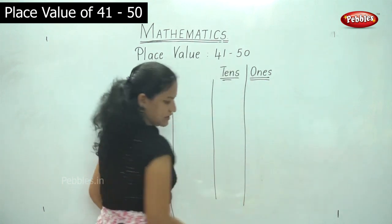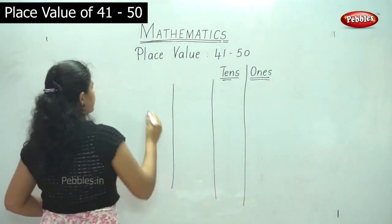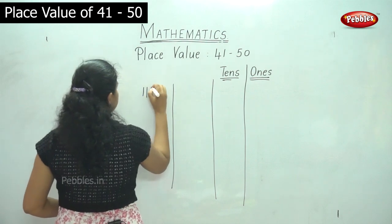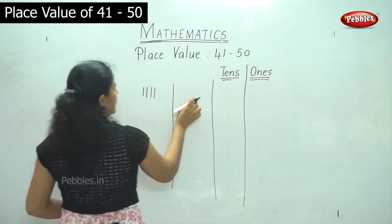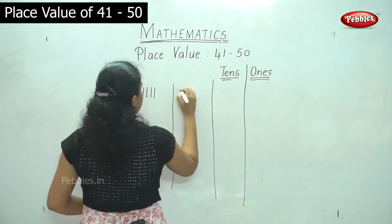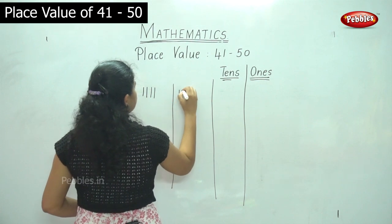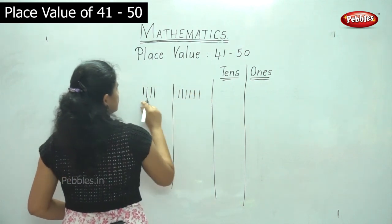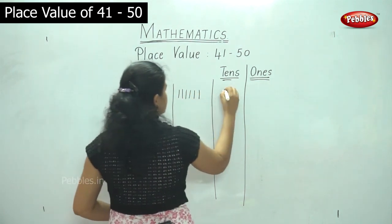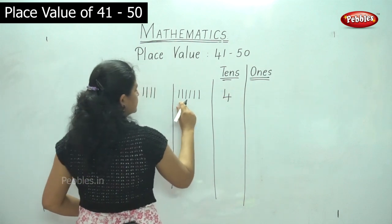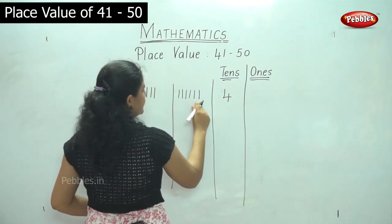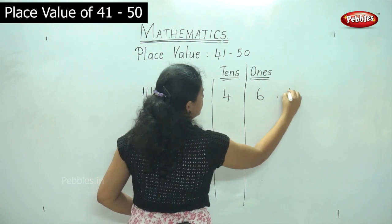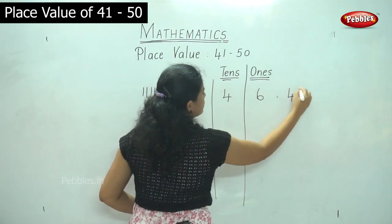So in the tens house I have 1, 2, 3, 4 and in the ones place 1, 2, 3, 4, 5, 6. So I have 4 tens and 6 ones. That gives the number 46.